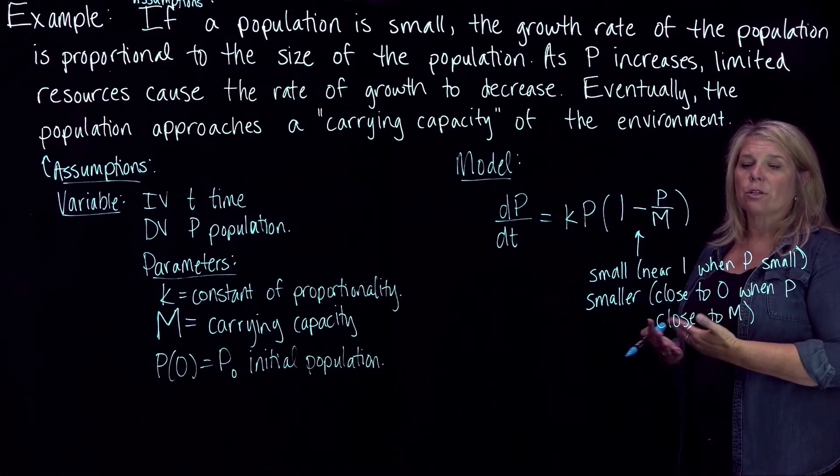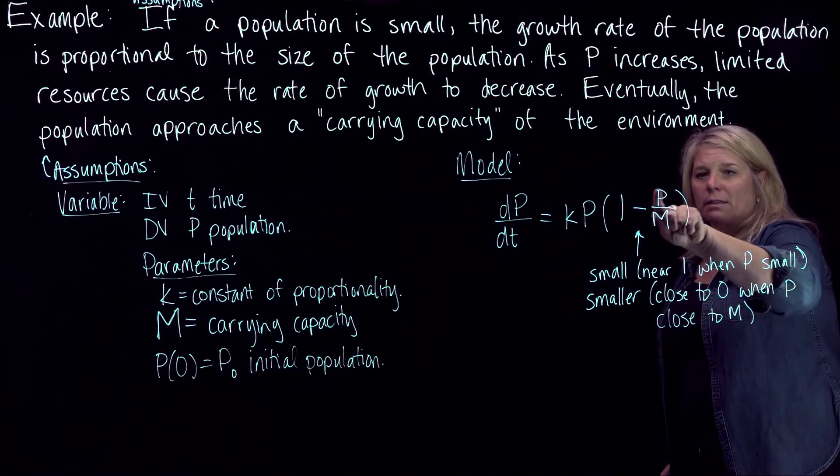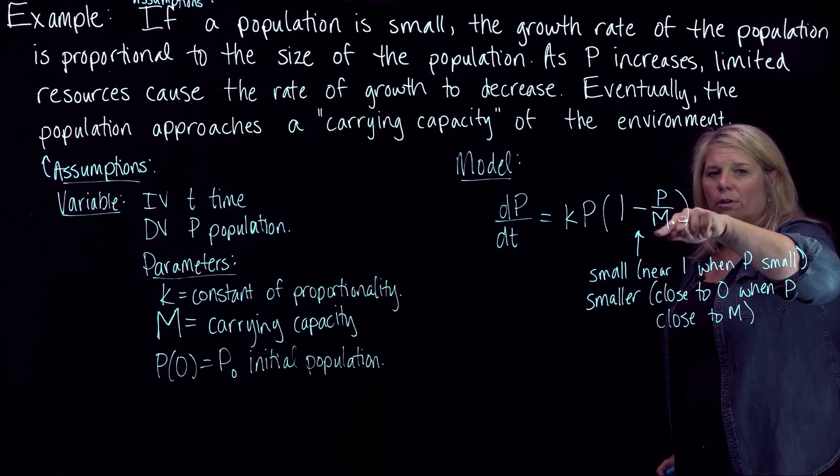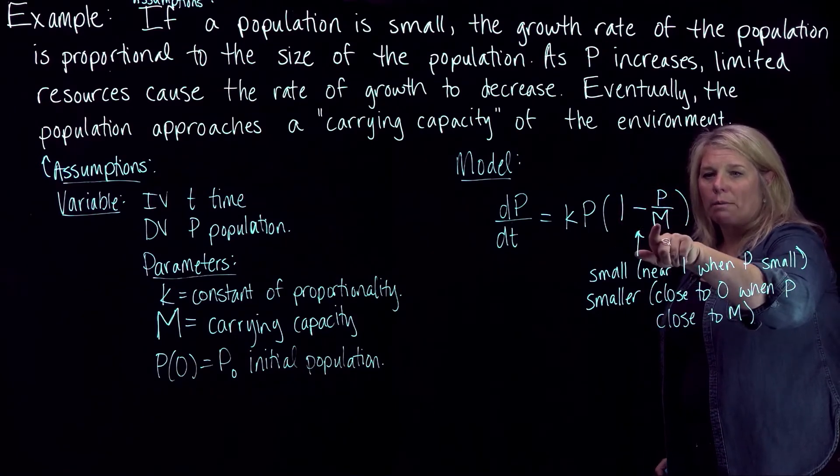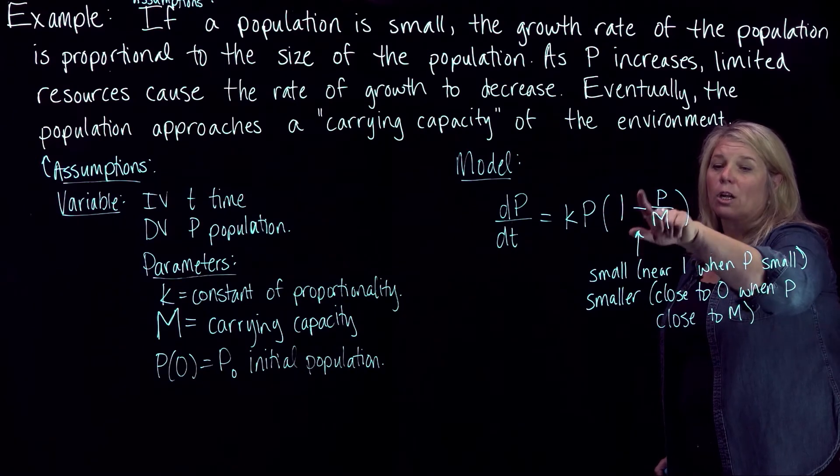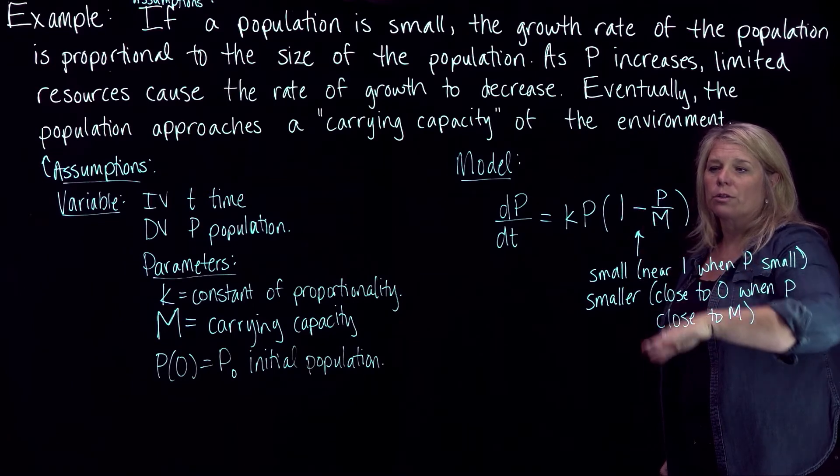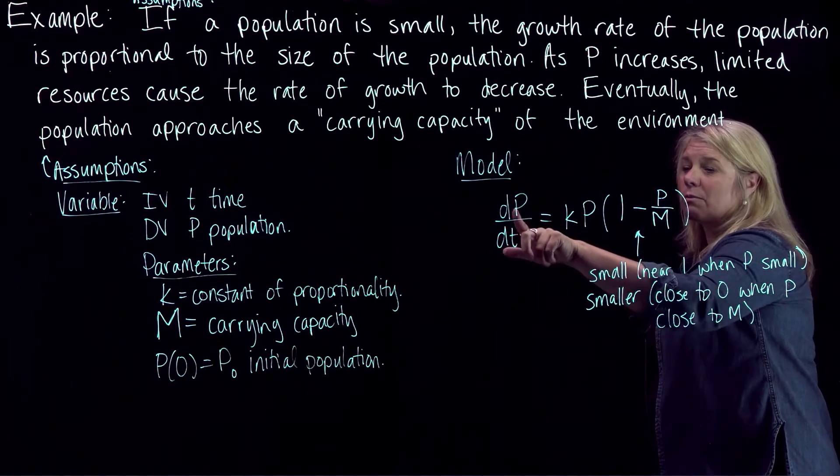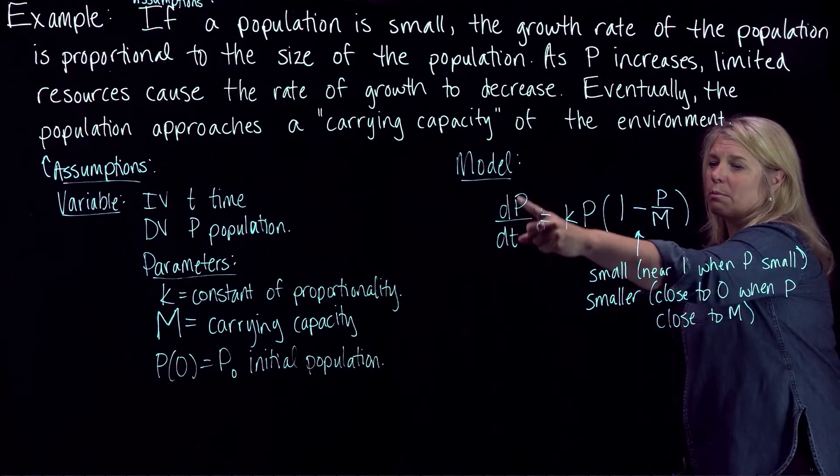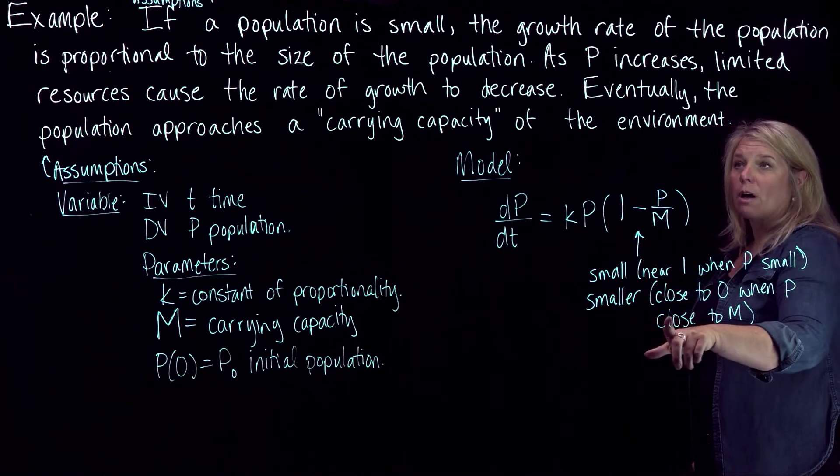And then when P gets closer and closer to M, this fraction gets closer and closer to 1. And so 1 minus something close to 1, but always a little bit less than 1, will get closer and closer to 0. So that will cause this rate of growth to still be positive, still a positive rate of growth, but slowing.